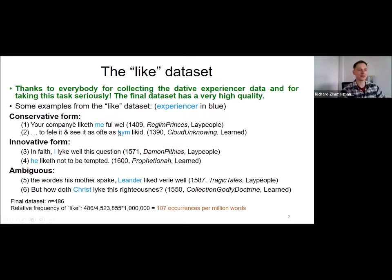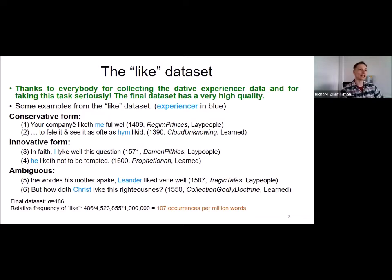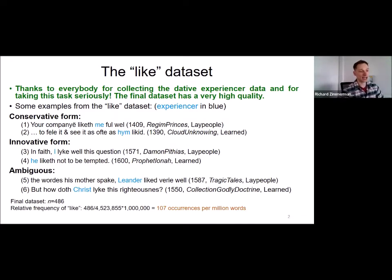Here we have 'me' and 'him' — those are unambiguously dative. The innovative form is nominative, as in 'in faith I like well this question' (1571) or 'for he liketh not to be tempted' (1600). Where there are two noun phrases, the forms will be ambiguous, as in 'the words his mother spake, Leander liked very well' — this could either mean Leander (nominative) likes the words (accusative), or the words (subject) pleased Leander (object). We don't know which interpretation the author had in mind.